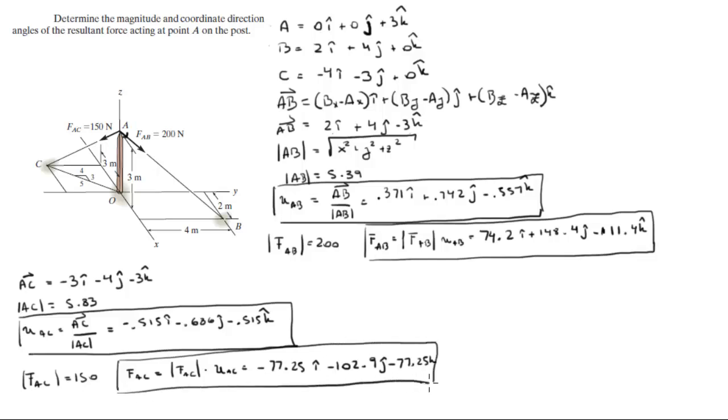Now that we have both vectors in Cartesian form, we can find the resultant force, which is simply adding the two vectors. And the resultant force comes out to be negative 3.05i plus 45.5j minus 188.65k.